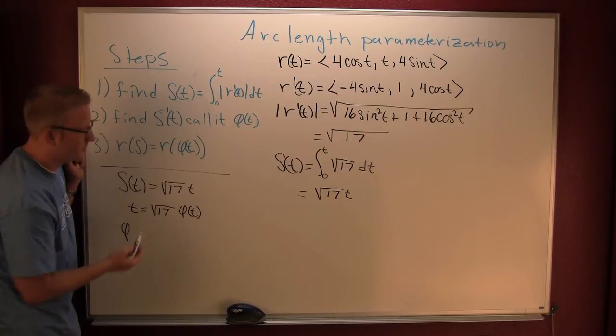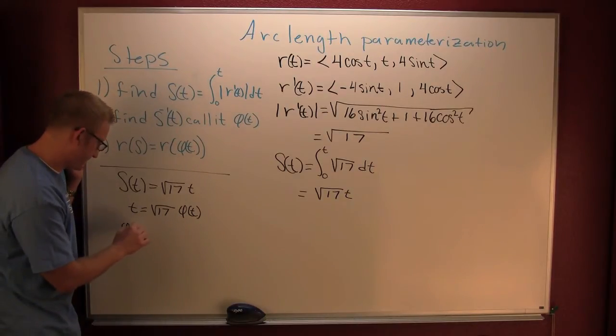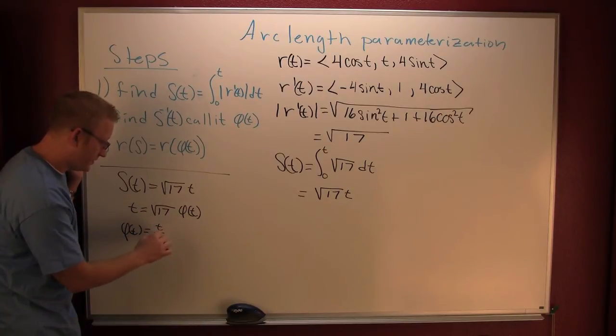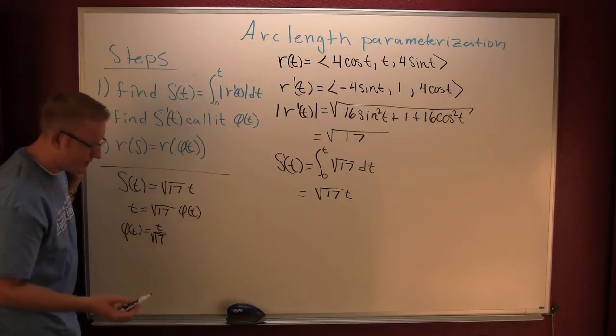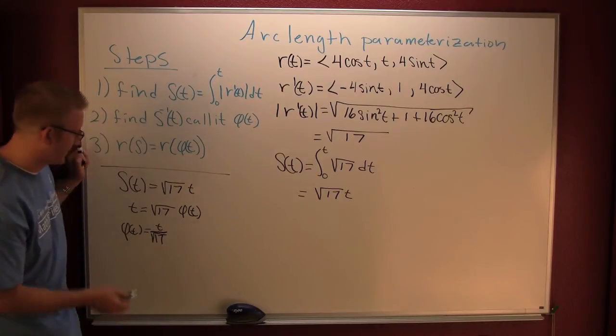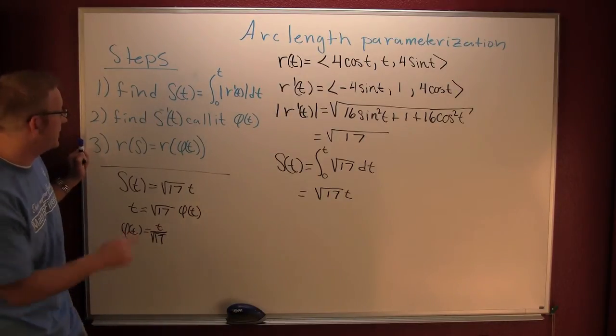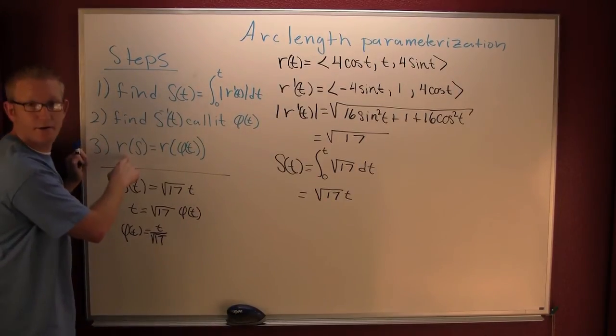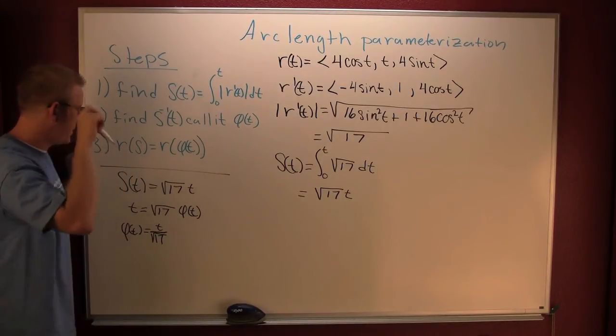All right, now that we got that guy, we solve for φ(t), and then that's t over √17 or the square root of... now you could rationalize that if you will. So I'm gonna be a little lazy. So now that I found φ(t), I'm on to my third step.